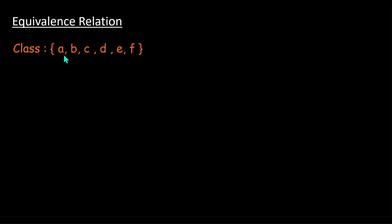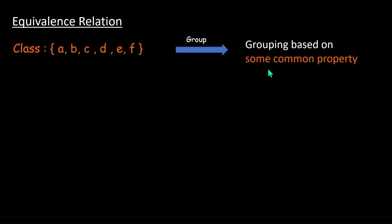Say we have a class of 6 students — A, B, C, D, E, F — and we want to split them into 2 different groups. That splitting cannot be random; it should be based on some common property, which means that the elements in one group should all share that common property.